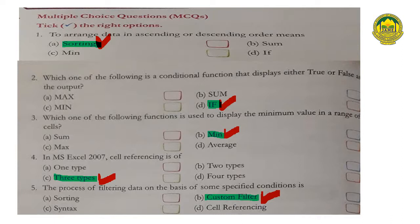Question number two: which one of the following is a conditional function that displays either true or false as the output? (a) MAX (b) SUM (c) MIN (d) IF. Answer: (d) IF is the right option.